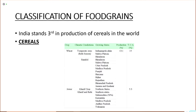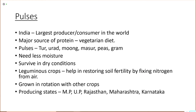When you are learning for your board exams, you can make a table as shown on screen — write the crop, the climatic conditions required, the growing states and the production. This tabular form will make it easy to remember the temperature requirement, rainfall and growing areas of a particular crop.